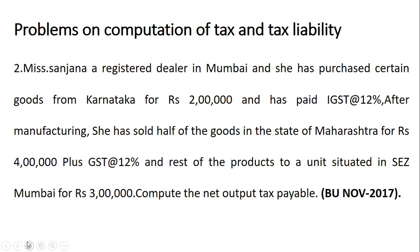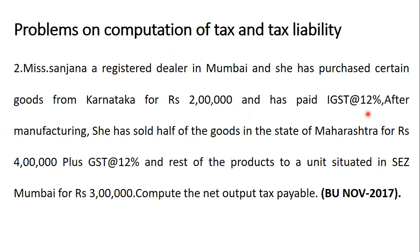Let me start with this important problem. Miss Sanjana is a registered dealer in Mumbai and she has purchased certain goods from Karnataka. Since Sanjana's business is in Mumbai and she is purchasing from Karnataka, this is clearly a case of interstate transaction. The purchase amount is two lakh rupees and she has paid IGST at the rate of 12 percent. On two lakh at 12 percent, the IGST paid is 24,000 rupees.